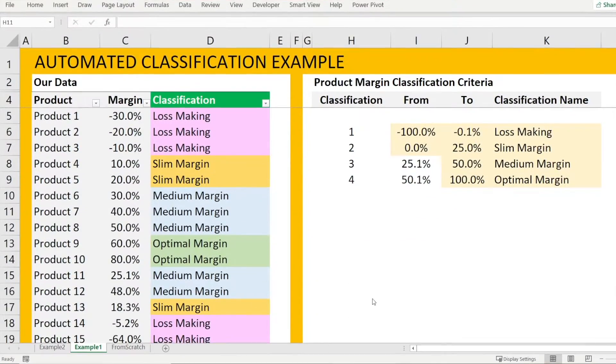Therefore, it's very useful to know how to create an automated classification in Excel so you don't have to redo your report over and over again. Perhaps create something that looks like this. Let's go through an example of automated classification.